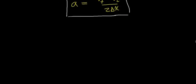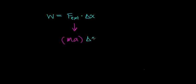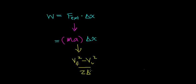Now we'll show how to reformulate Newton's second law with the definition of work to arrive at a powerful energy theorem. Work equals the external force times the distance over which that force acts, assuming force and displacement are in the same direction. Using Newton's second law, force equals mass times acceleration, so work also equals mass times acceleration times distance. Substituting our expression for acceleration — (vf² − vi²) / (2·Δx) — we get work equals mass times that quantity times delta x.